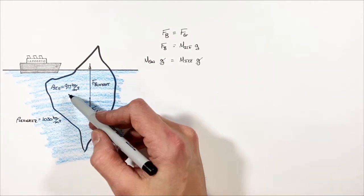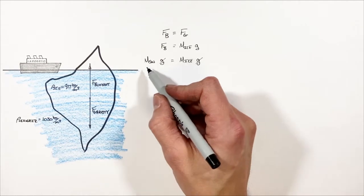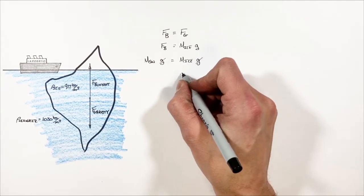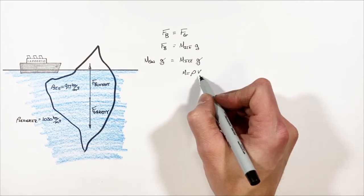Now the only values we know in this problem are density. So what I want to do is relate mass to density through volume. You'll remember, mass is given by density multiplied by volume.